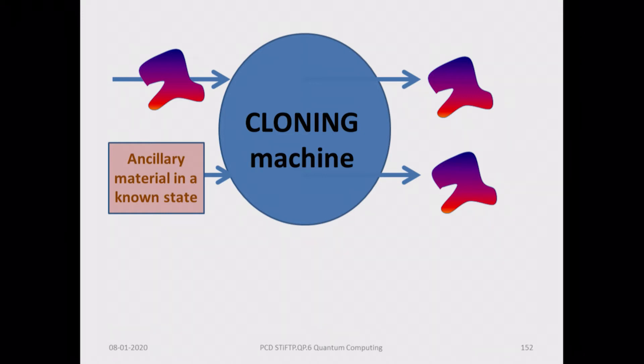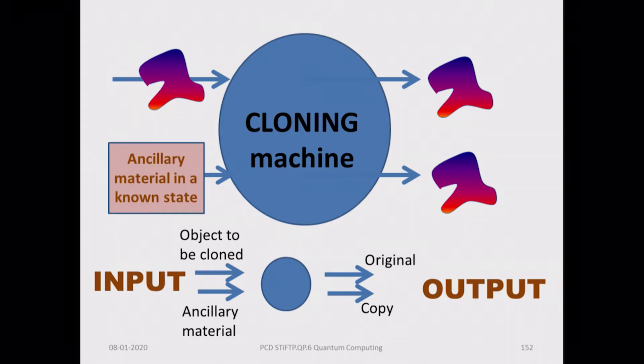So this is what a cloning machine is. You put in an object — no matter what it is, whether it is the Taj Mahal or a picture of a tiger or an elephant — and you use the cloning machine to get two such pieces. The input consists of the object to be cloned and the ancillary material from which the clone will be made. The machine gives you as output the original and a ditto copy of the original.